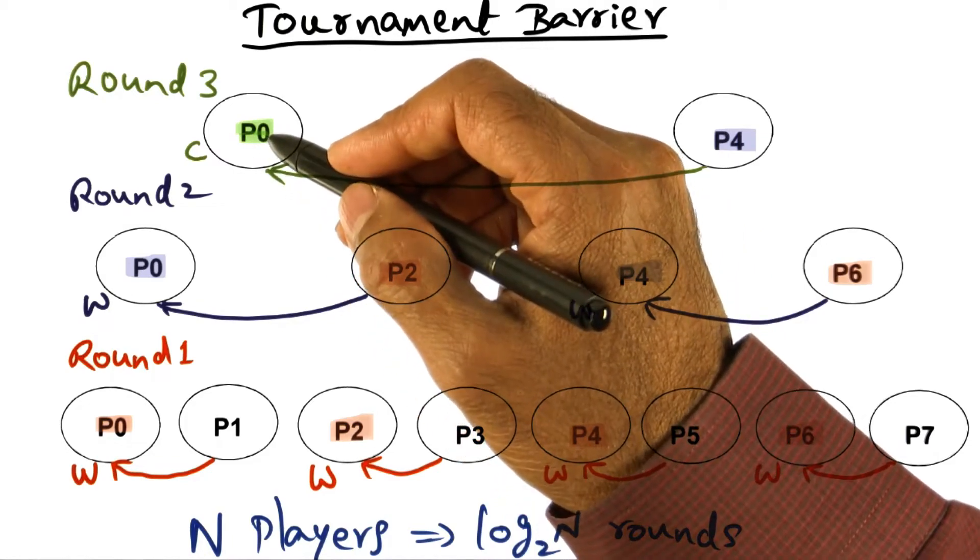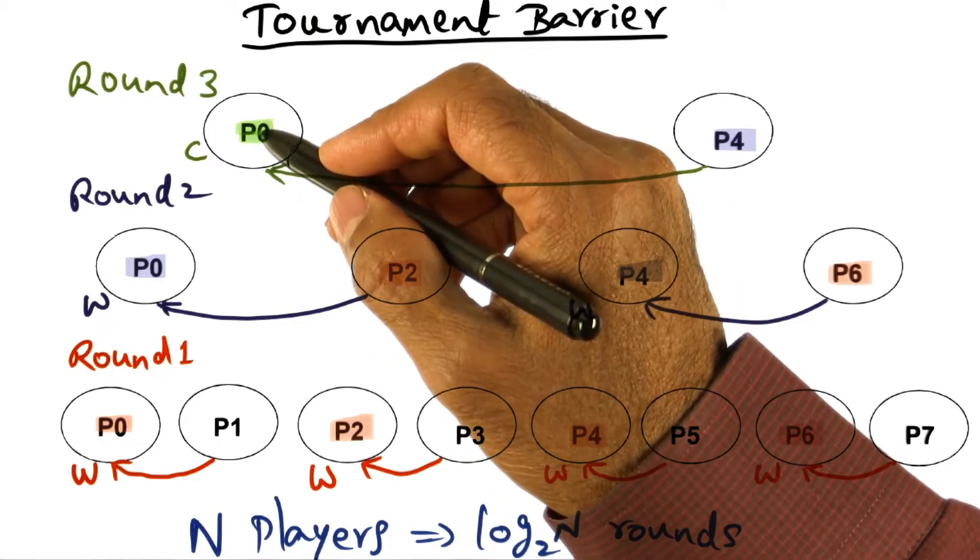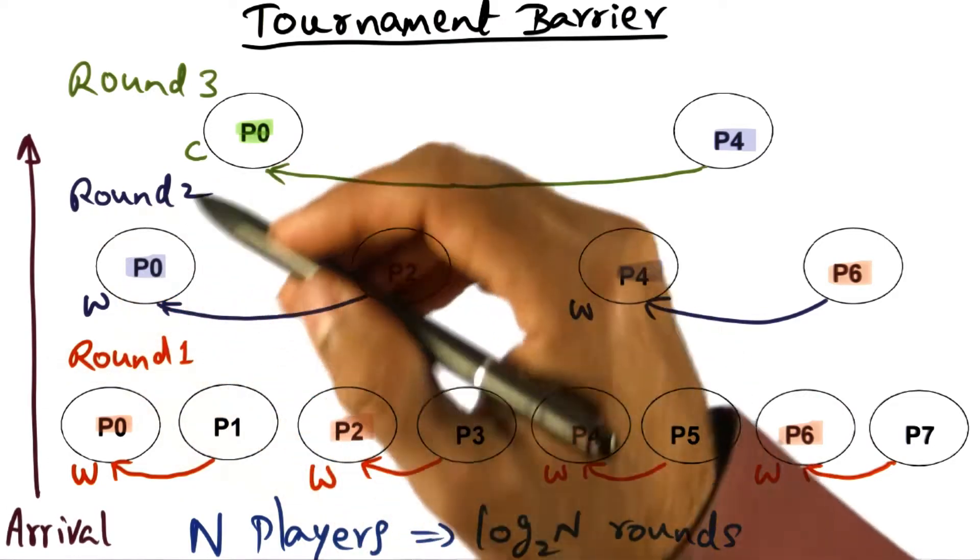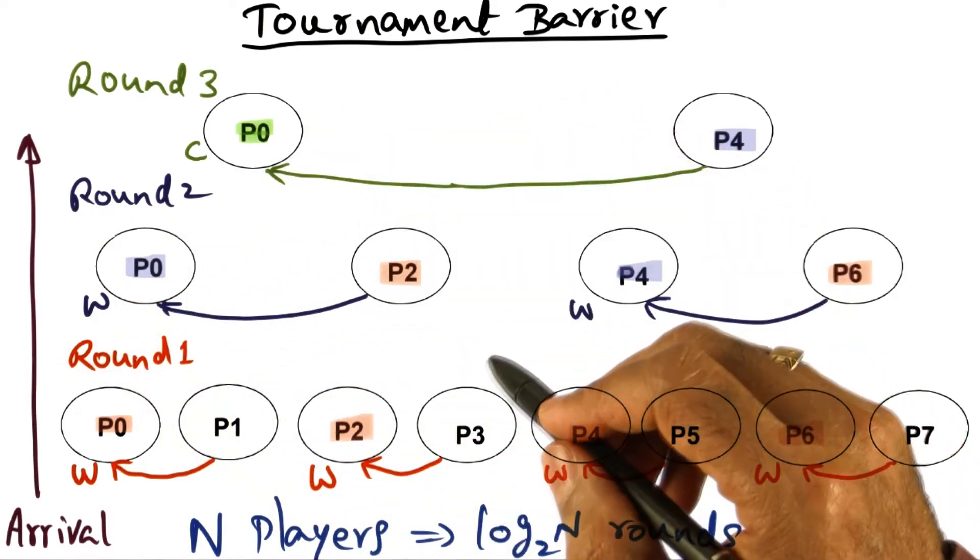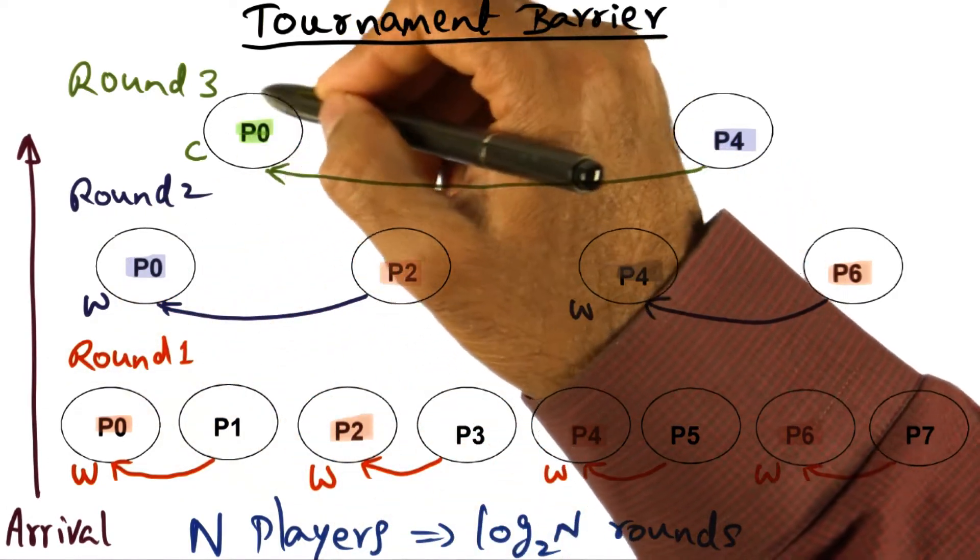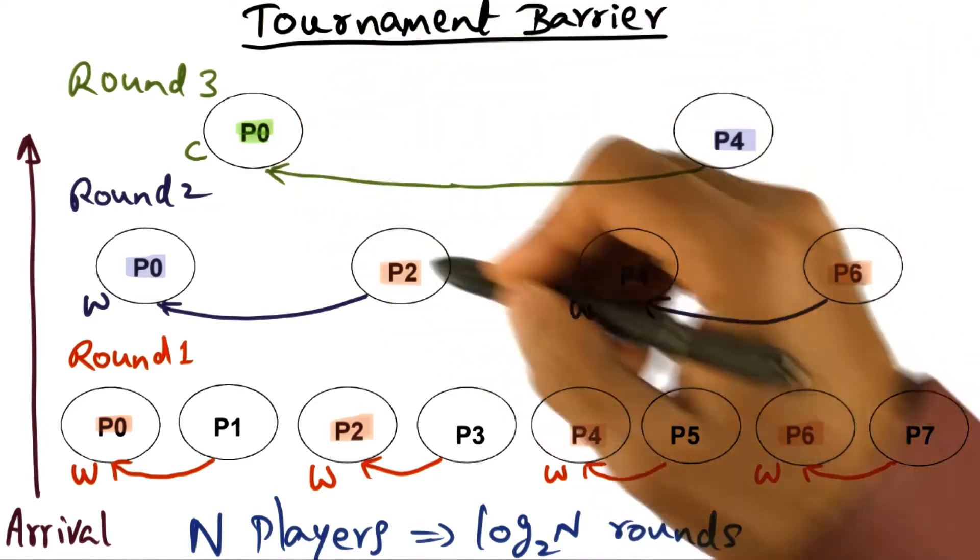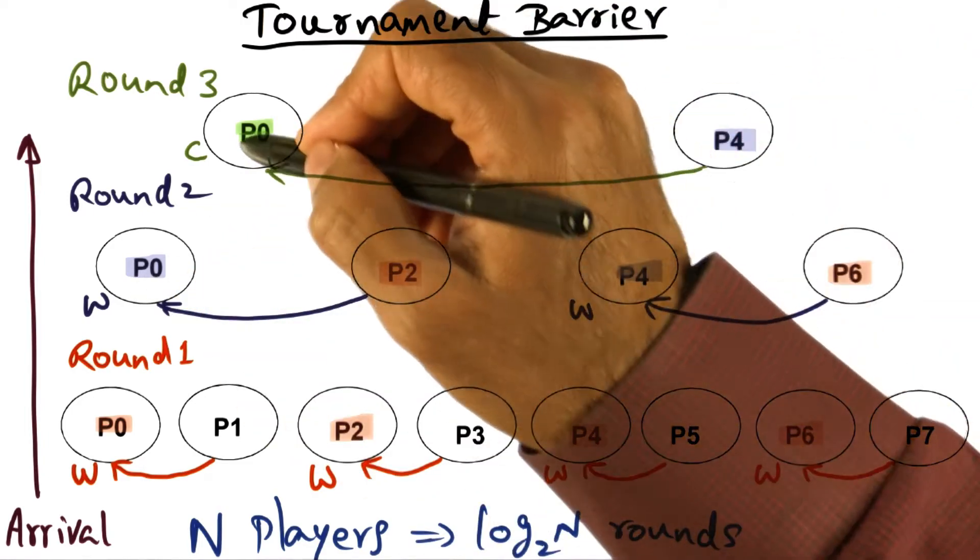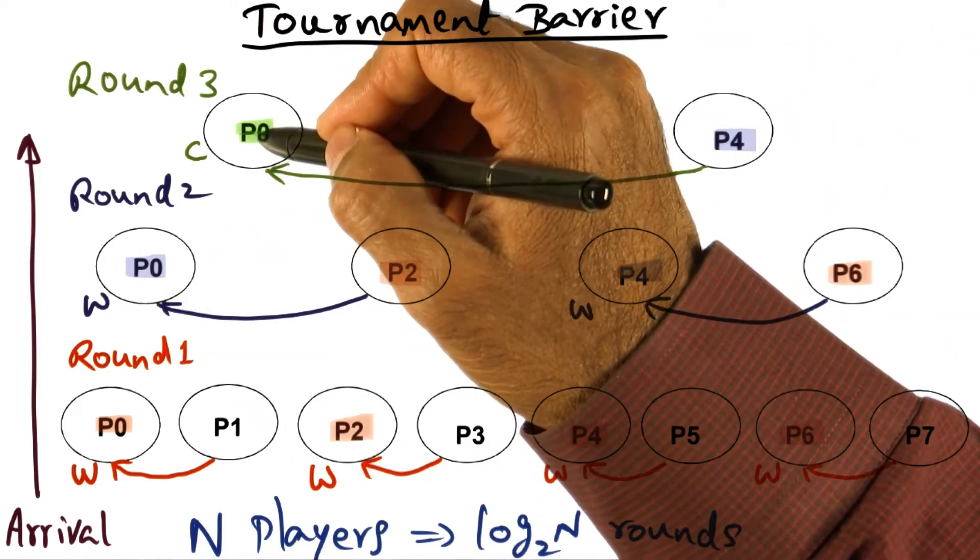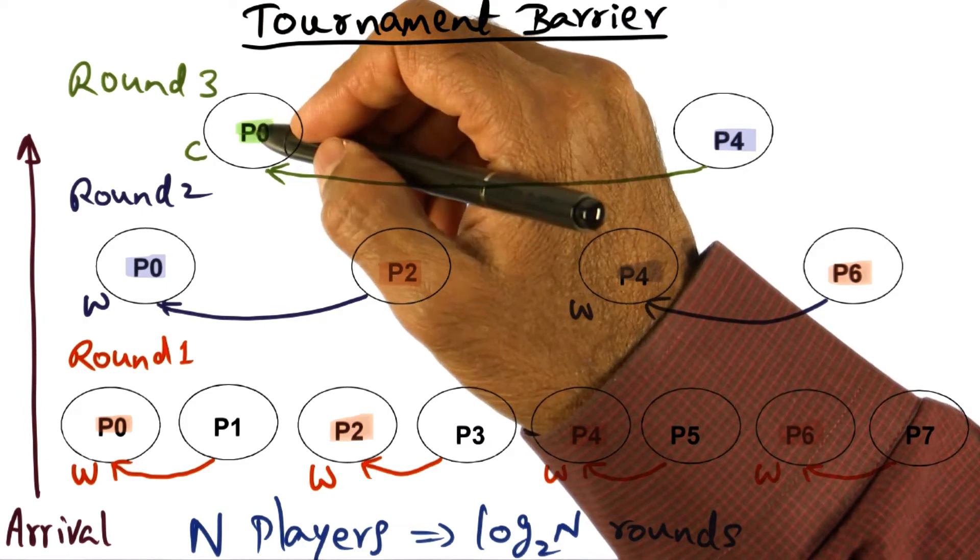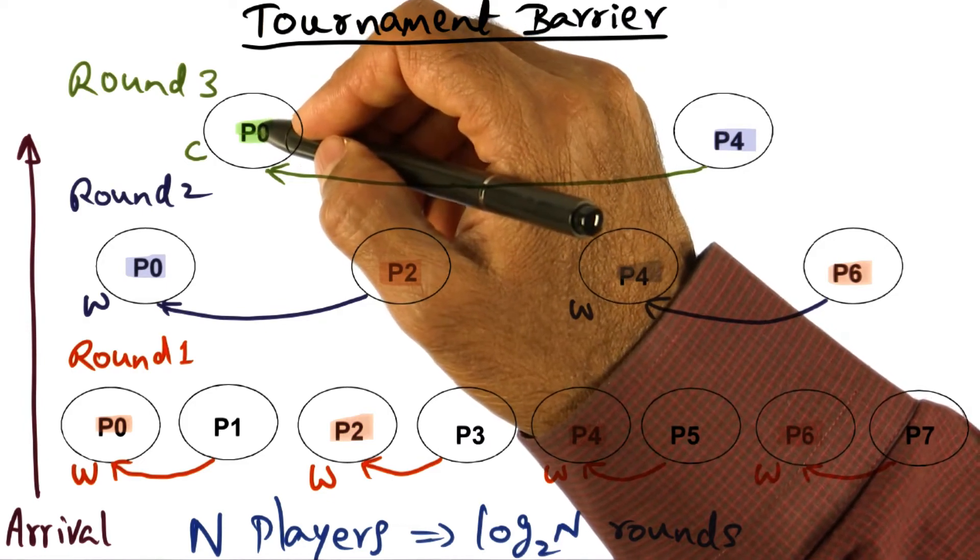So at this point, when P0 is declared the champion of the tournament, what we know is that everybody has arrived at the barrier. And this knowledge is available with P0, but not with anybody else. Everybody has arrived at the barrier, but P0 is the only one who knows because he's a champion. He knows that everybody has arrived at the barrier.